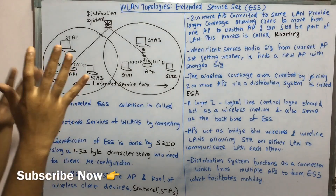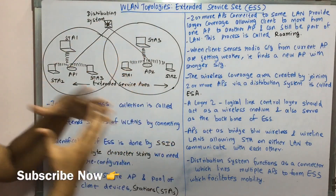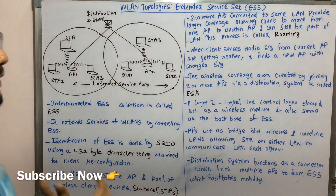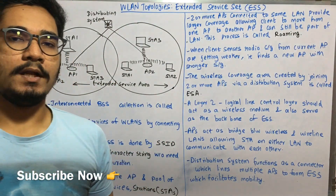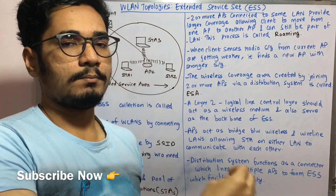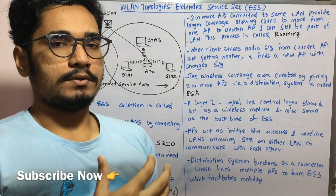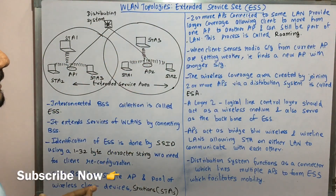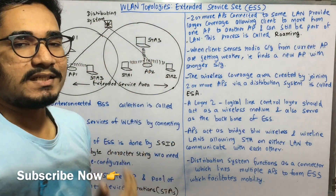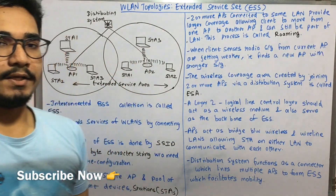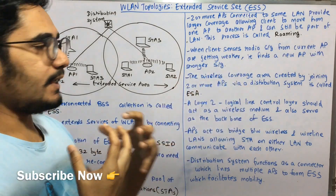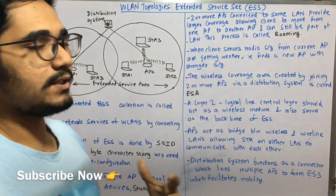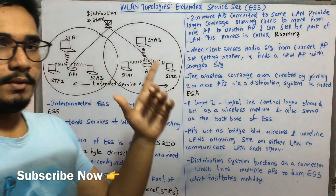This larger coverage allows clients to move from one AP to another while still remaining part of the same LAN — this process is called roaming. As we saw in handoff strategies, when a mobile user moves from one base station to another, the handoff process begins. When a client senses that the radio signal from the current AP is getting weaker, it finds a new AP with a stronger signal — that is where handoff comes into picture.